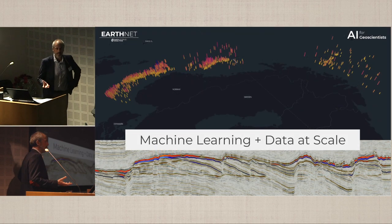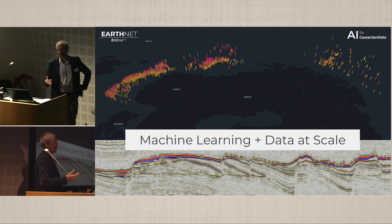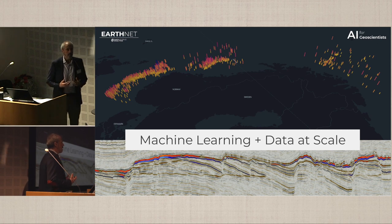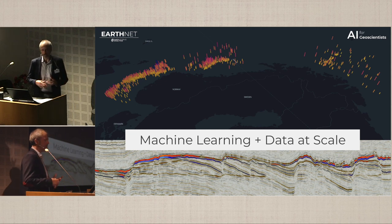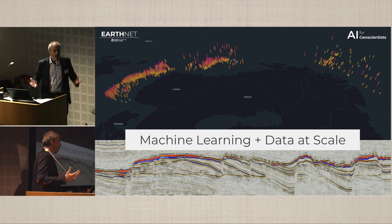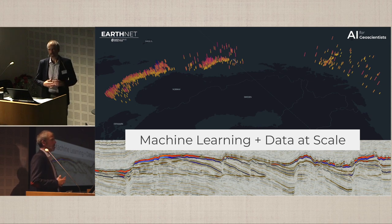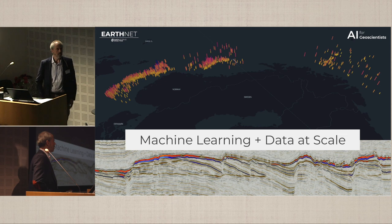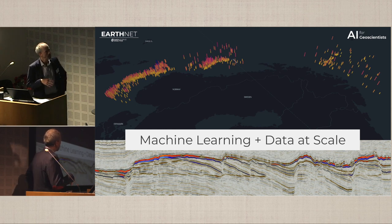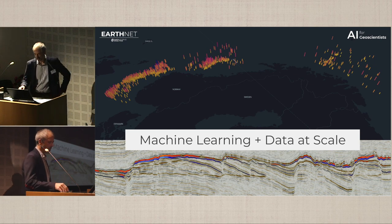One of the big benefits of machine learning with modern tools is the ability to work at data at scale — at a scale that previously we may not have considered at all or may not have been feasible. Now we can test what it's like to use large amounts of data within machine learning models, bring in large amounts of well data, combine that to make predictions at seismic scale over larger regions. We're presenting results from work on rock properties.